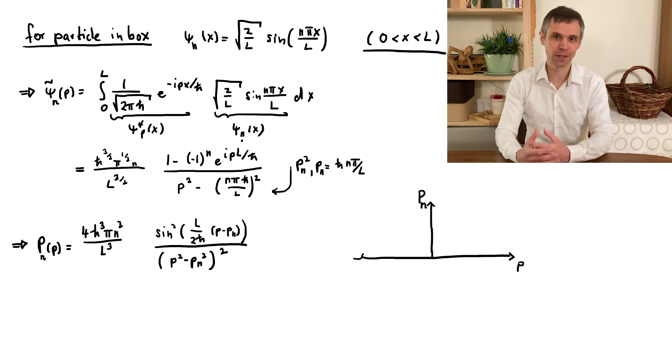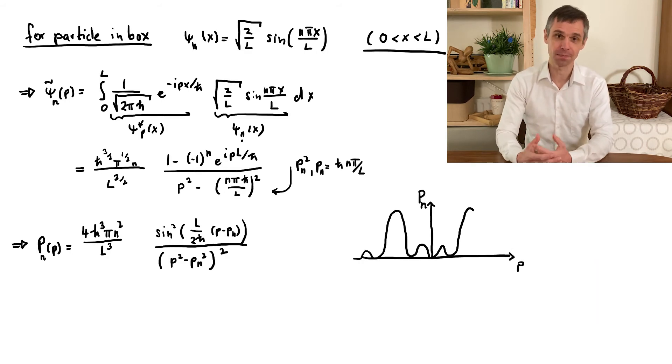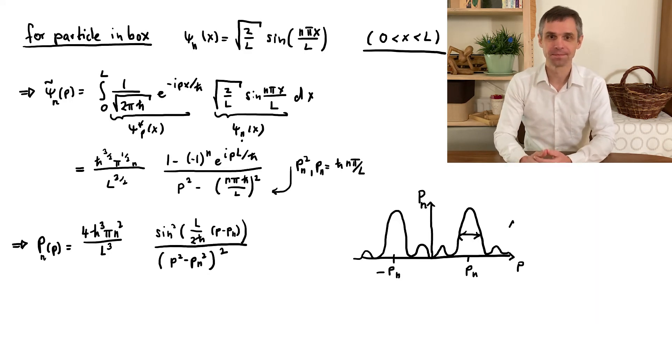When we plot this as a function of p, we see that it indeed has maxima near pₙ but with a spread which I indicate here as Δp. When you look at the mathematical expression, the width of this peak traces back to the sine function, and looking into the argument you can read off how this width scales: it is of the order of ℏ divided by L.